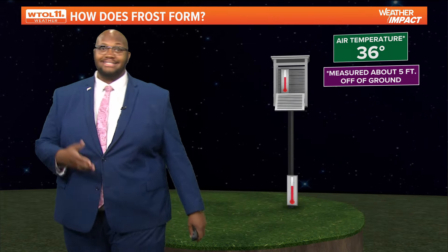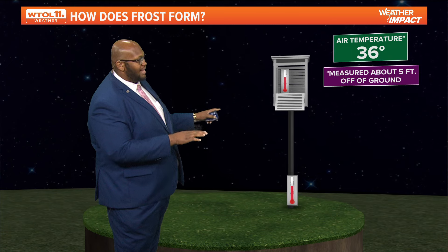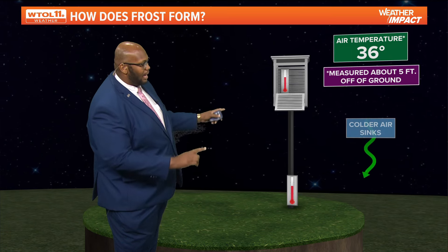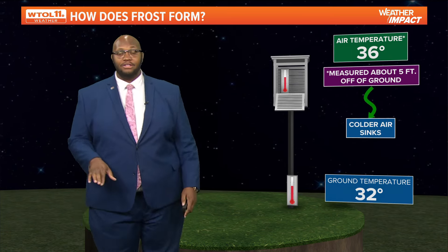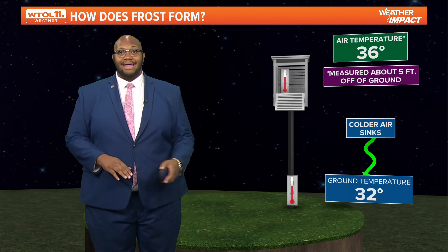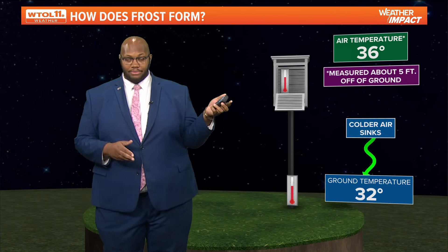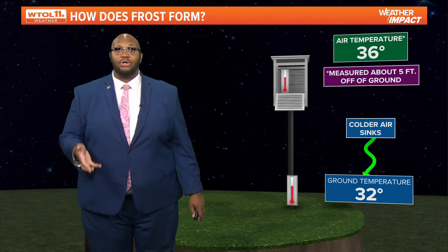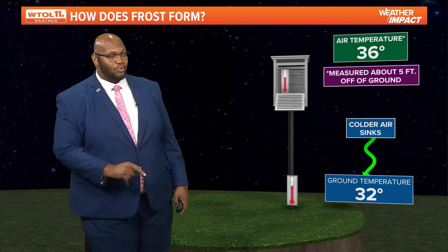Frost typically forms when you have an air temperature right at 36 degrees — that's measured about five feet off the ground. But as you drop down, cold air starts to sink, and you can see that air temperature around 36 degrees while the ground temperature is about four degrees colder, at 30 to 32 degrees.